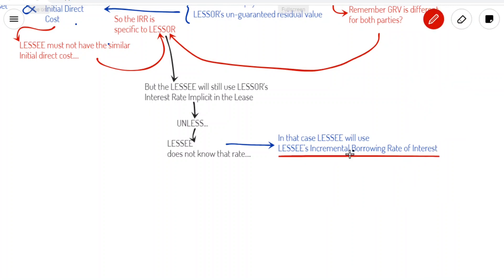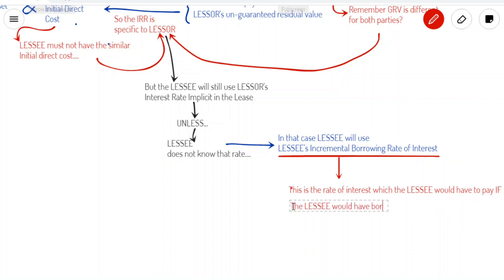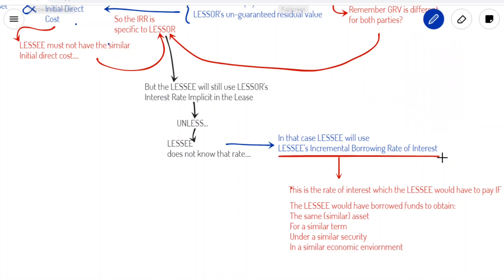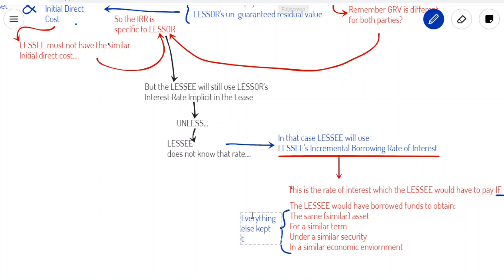Now, according to the standard, the lessee's incremental borrowing rate of interest is the rate of interest that a lessee would have to pay to borrow over a similar term and with a similar security the funds necessary to obtain an asset of a similar value to the right-of-use asset in a similar economic environment. This means that if the lessee would have obtained a loan from somewhere else to actually purchase that asset, under the same security — assuming that asset has been placed as security to the lessor — it should be assumed the lessee would place that same asset as security to the other lender. That rate at which that other party would have given the loan to the lessee should be considered as the lessee's incremental borrowing rate of interest.